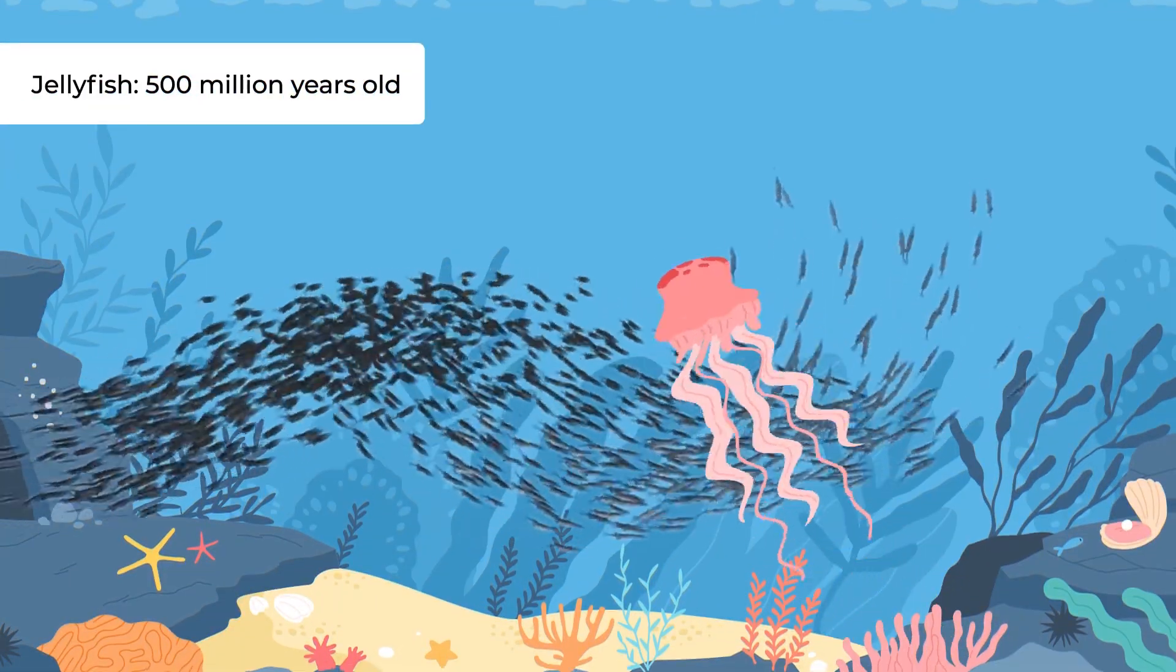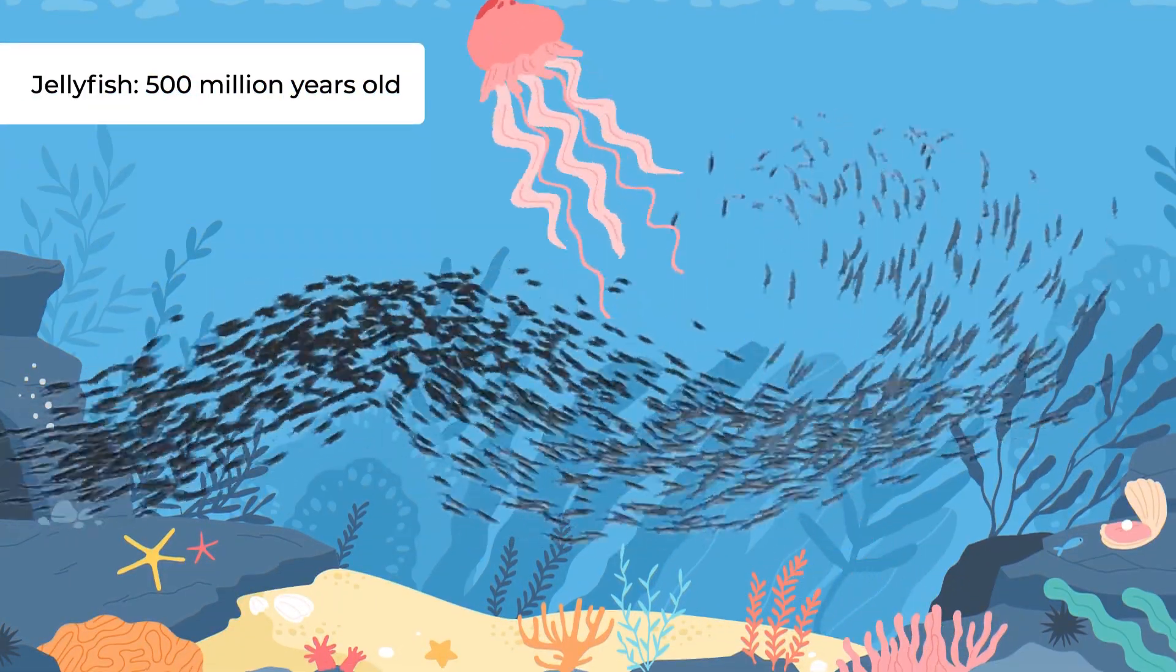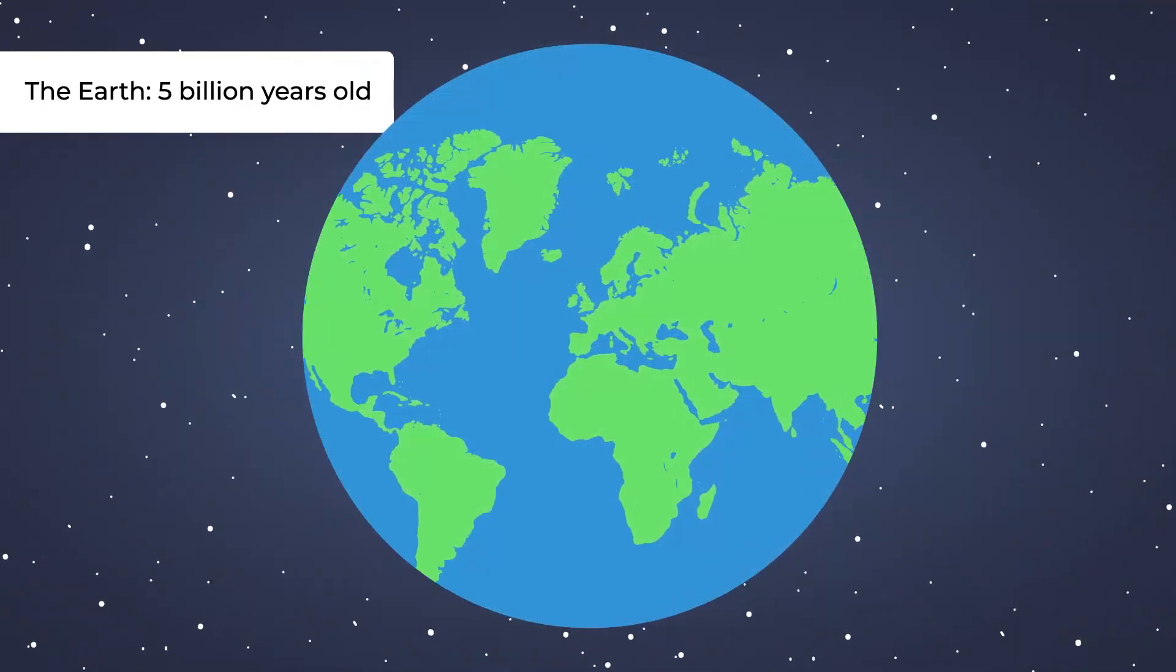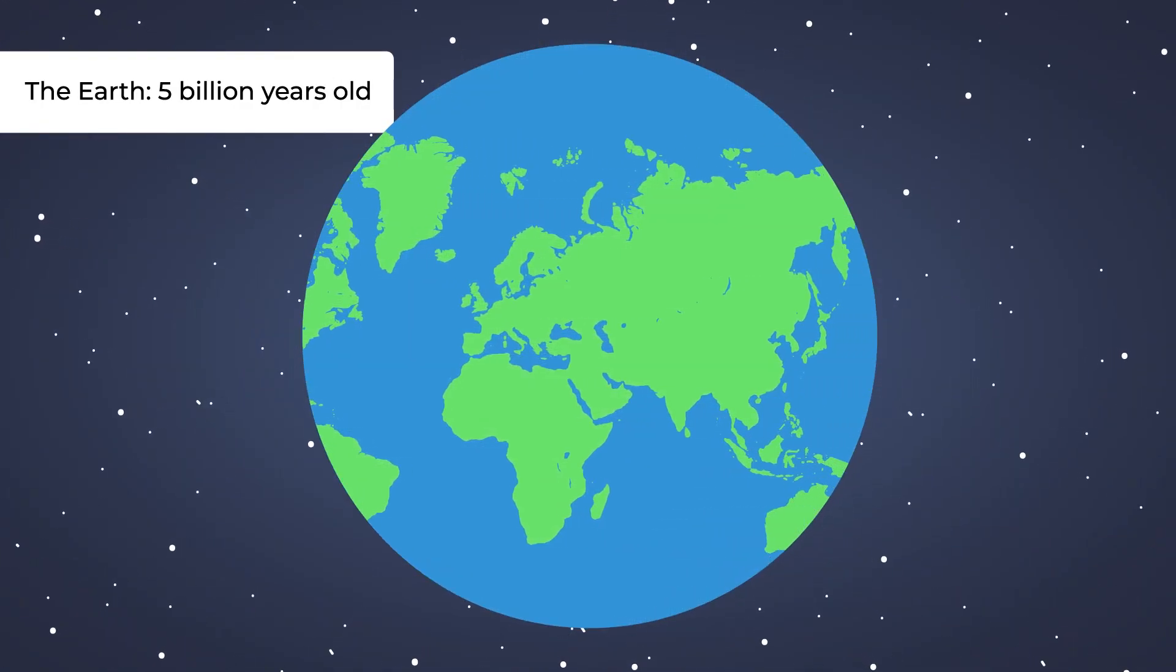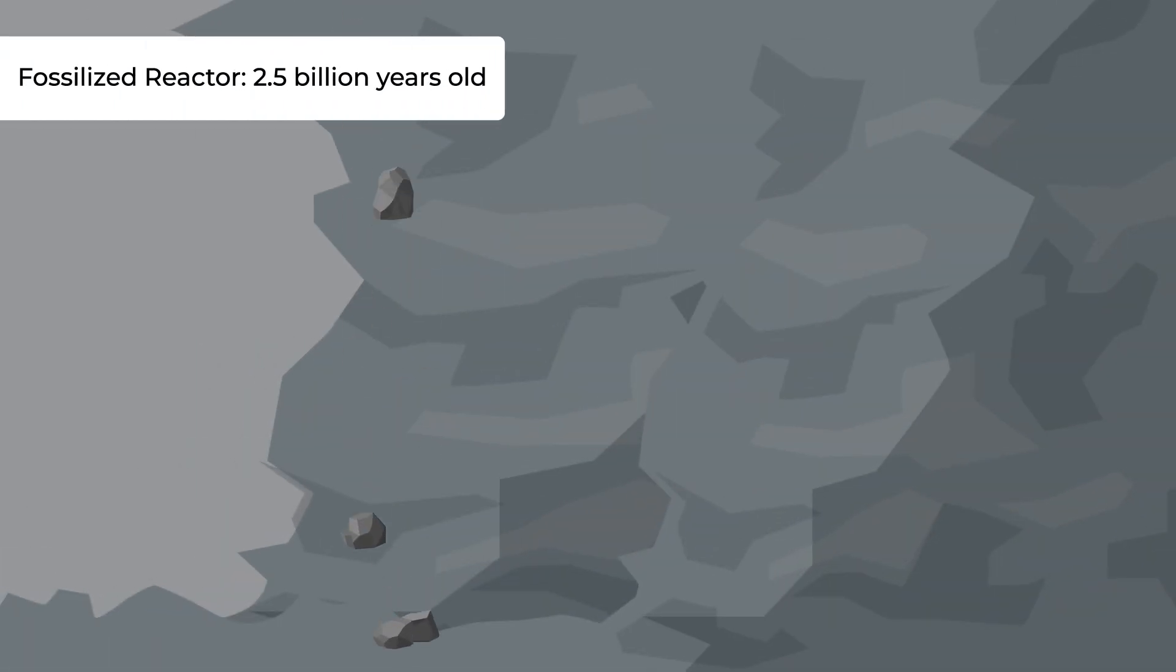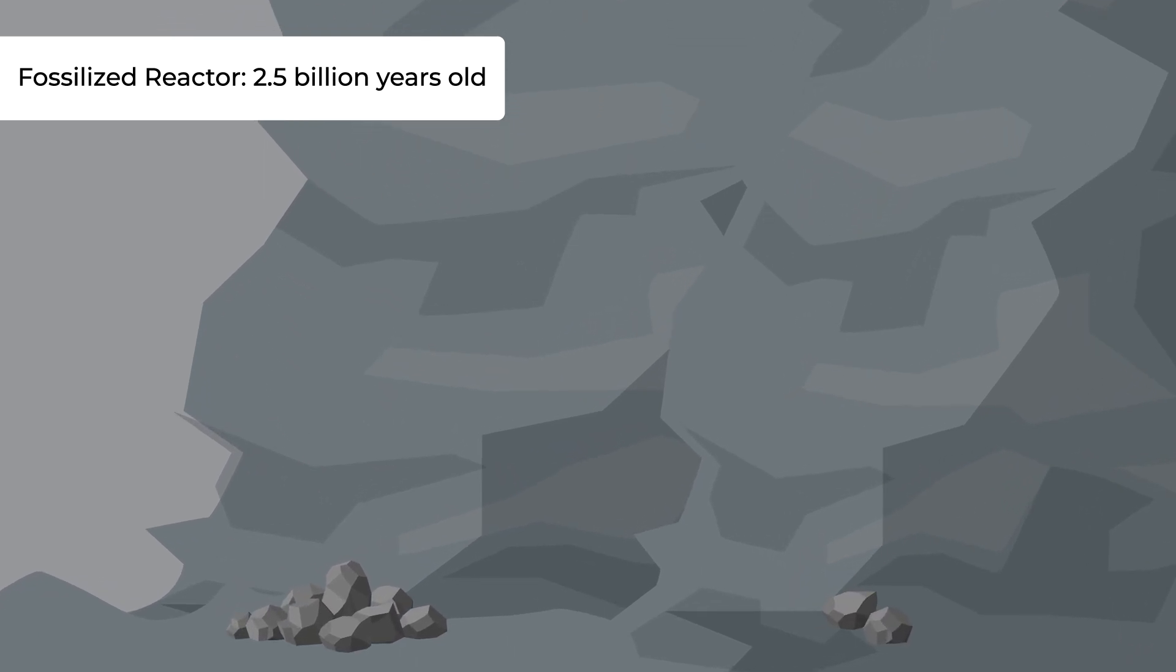Jellyfish, one of the world's oldest species, have been around for maybe 500 million years. Even the Earth itself is only estimated to be four or five billion years old. Basically, this nuclear reactor is only half as old as the very planet we live on, and it's hard to wrap your head around.